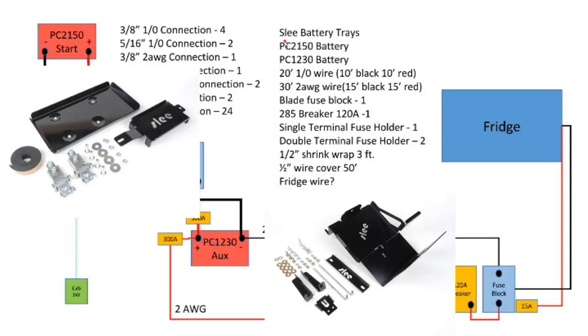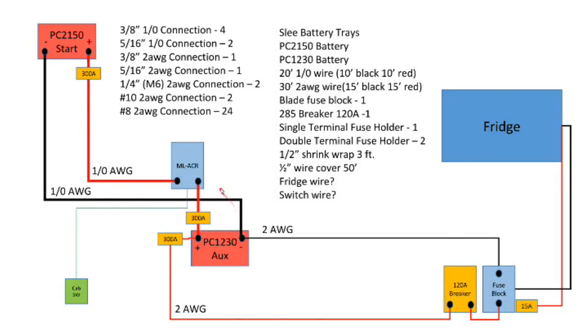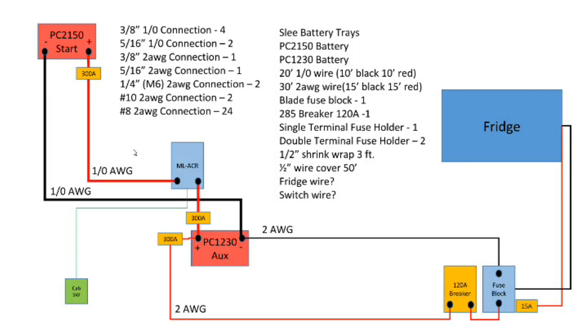For the wiring between the MLACR and the aux and the start battery, we decided to go with a one gauge wire. In the amperage charts I thought I might be able to get away with two gauge, but one gauge was gonna be better and I really want this thing to hold up to the long term. And if I decide to rewire this where the 1230 is the start battery, having that one gauge wire already in place is gonna be a necessary thing and we'll cross that bridge with you guys when we get to it.